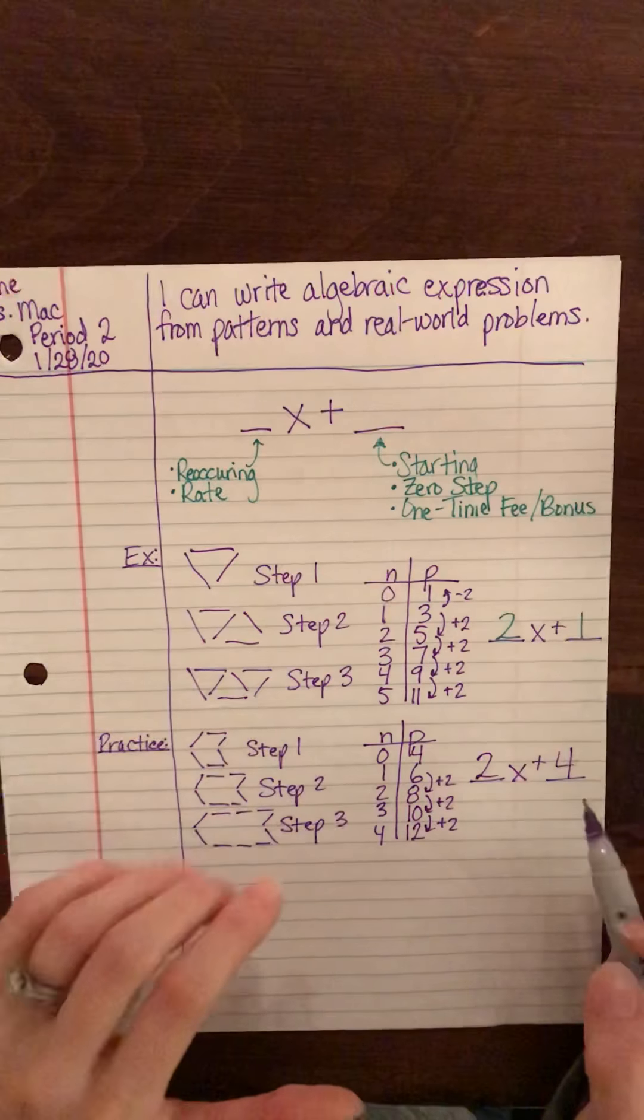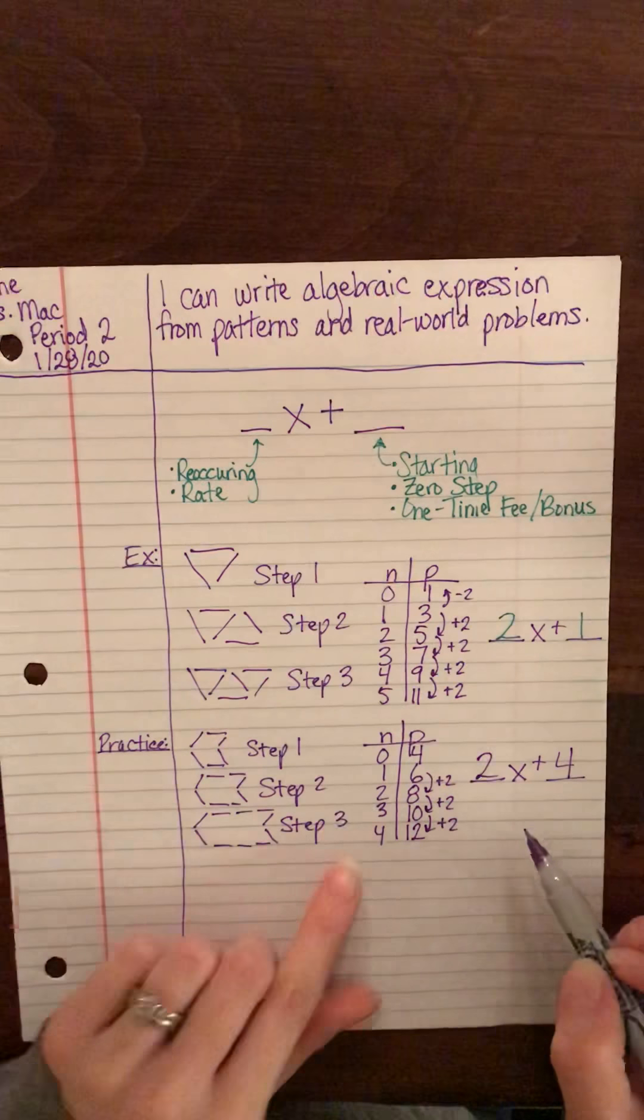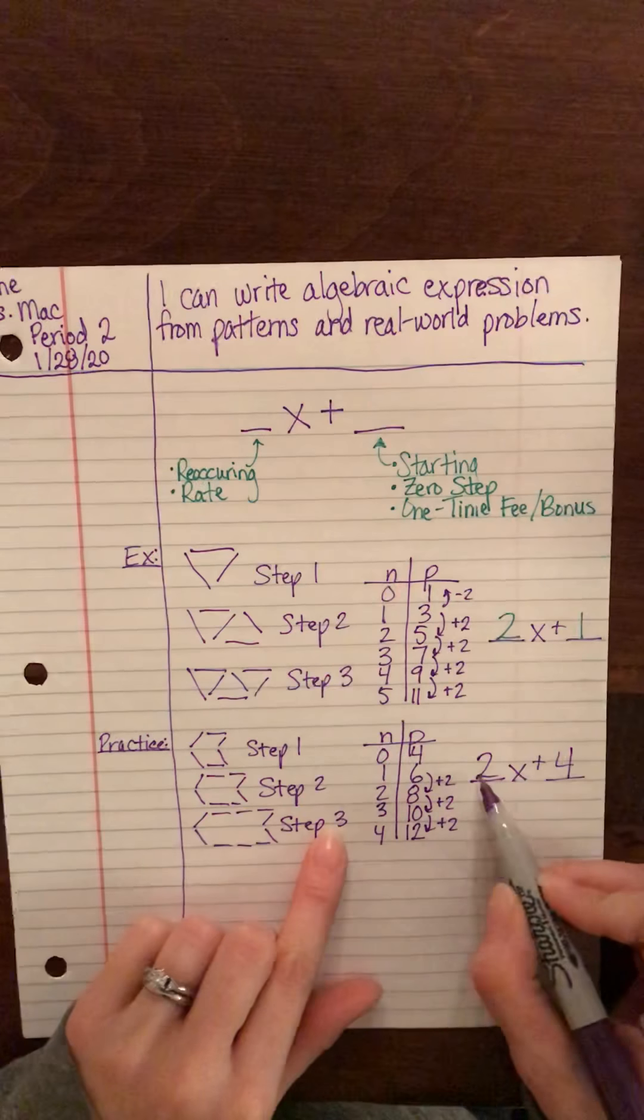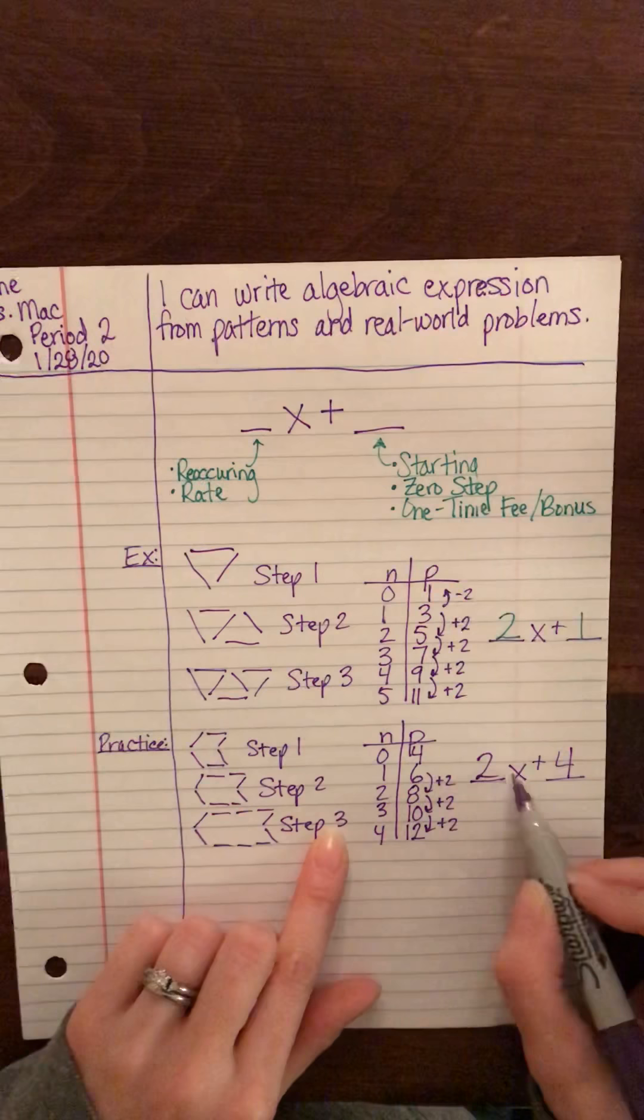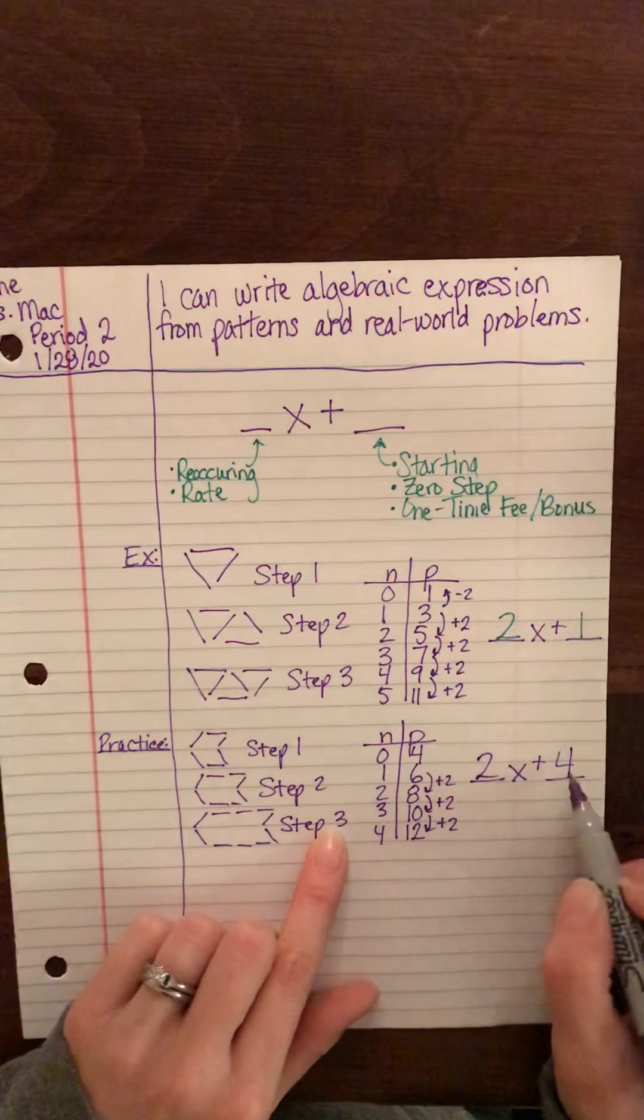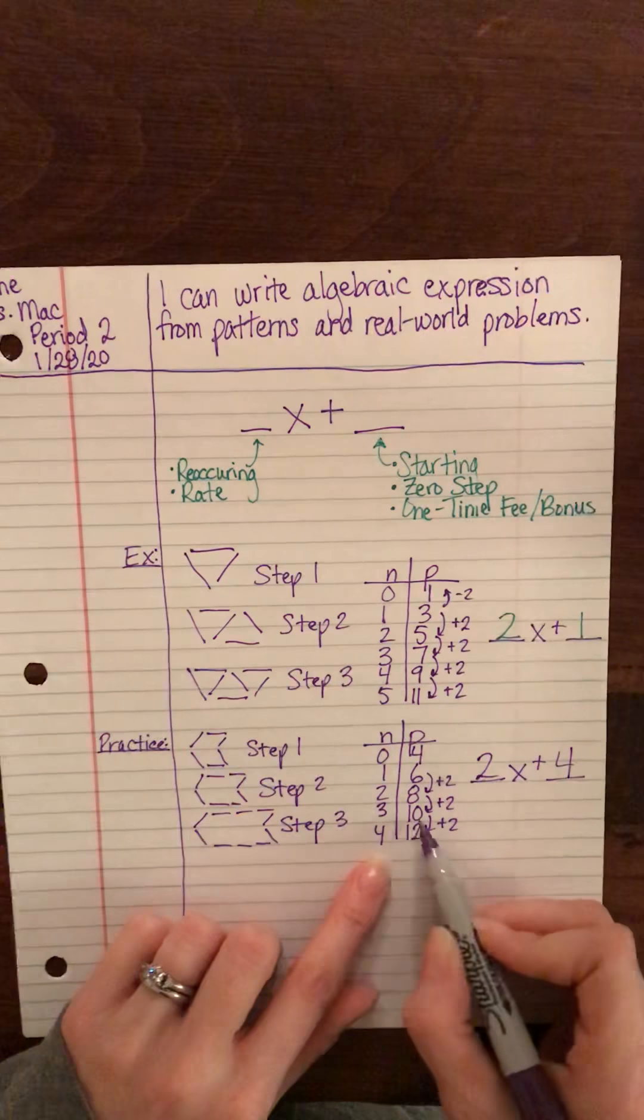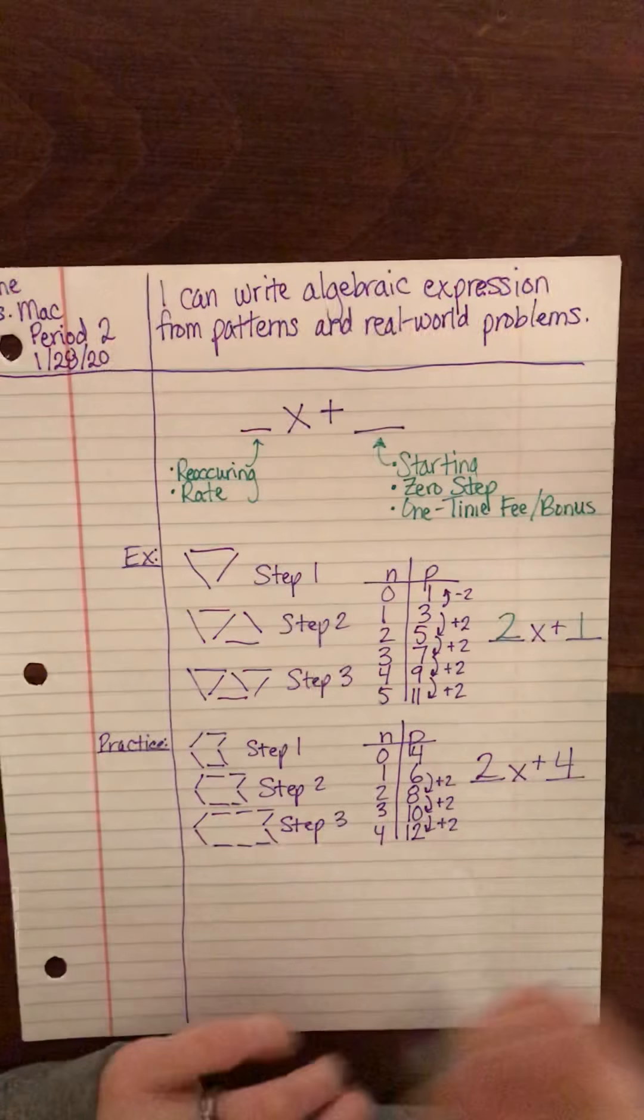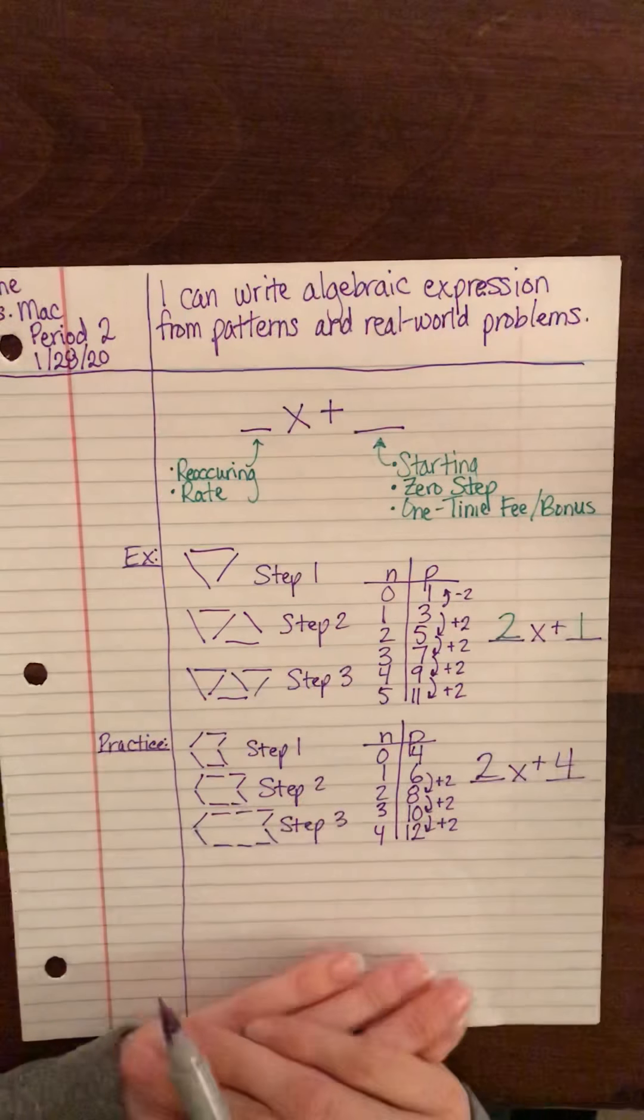Now if we do want to double check this, I'll plug in two and three. Two times three is six, six plus four is ten, and that is how many toothpicks are at that step, so you know that your expression is correct.